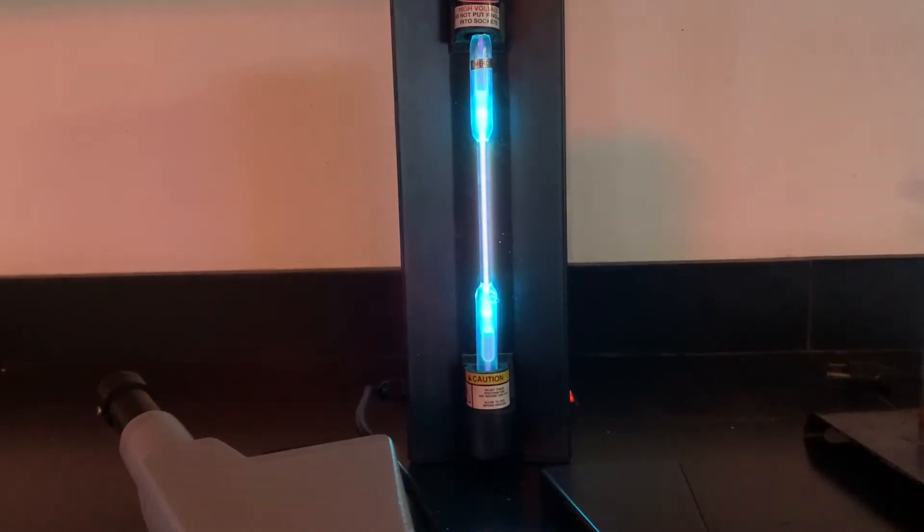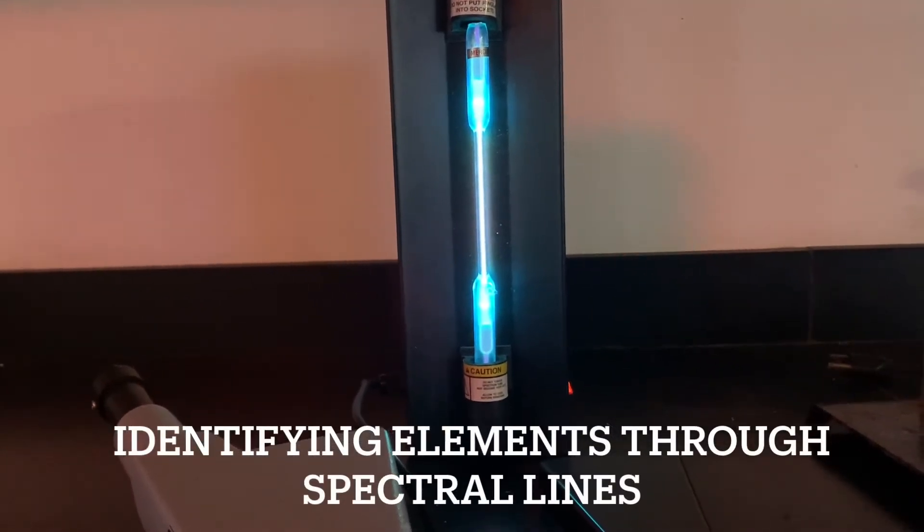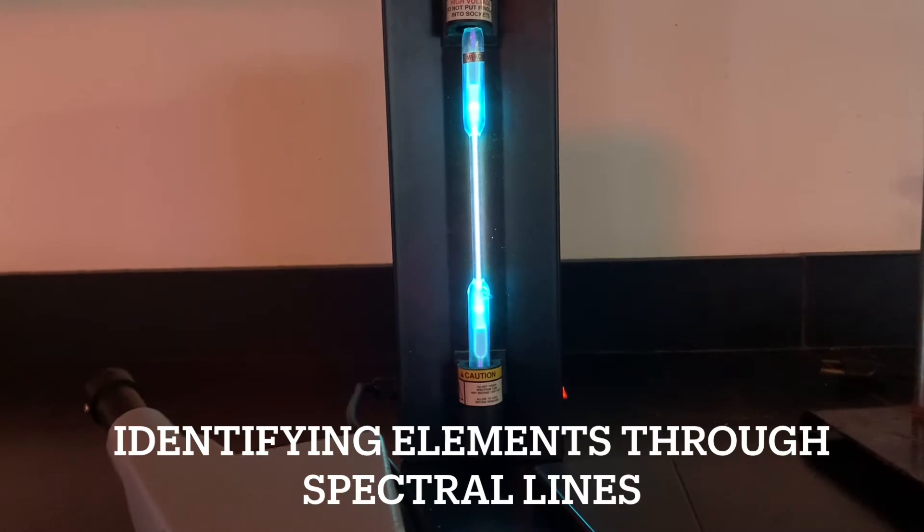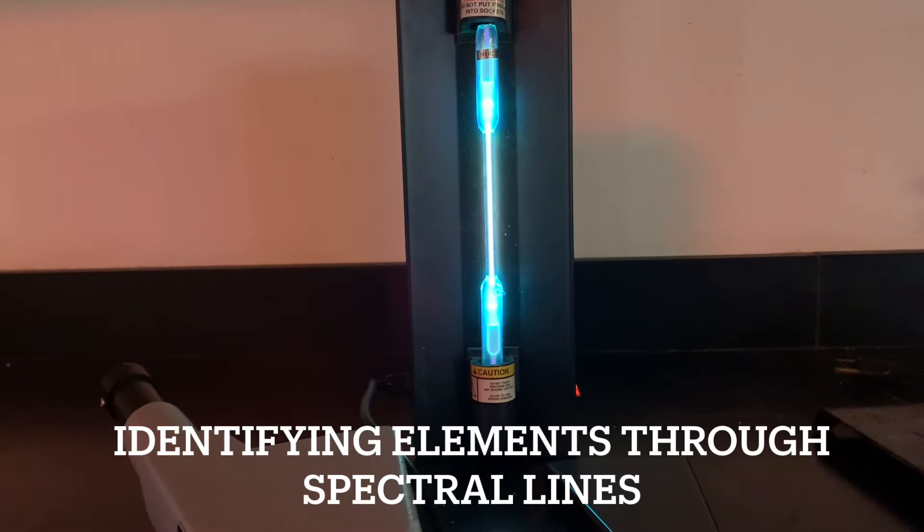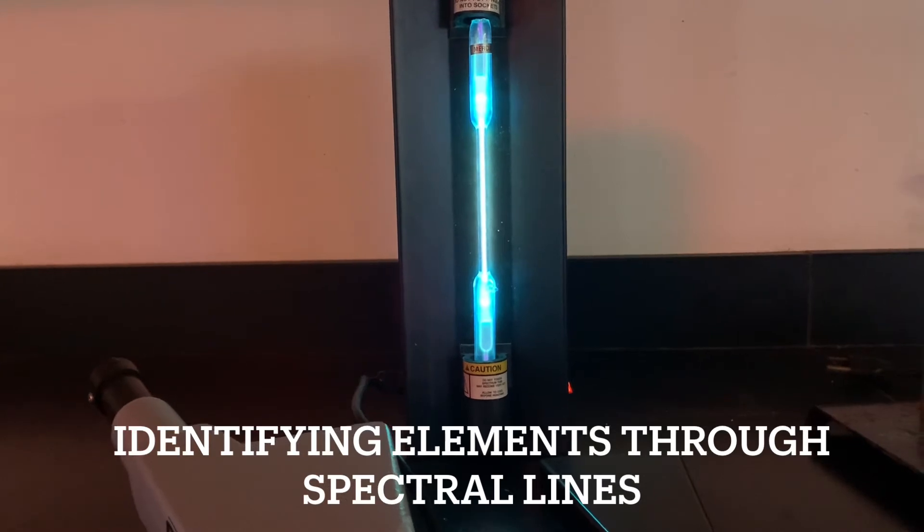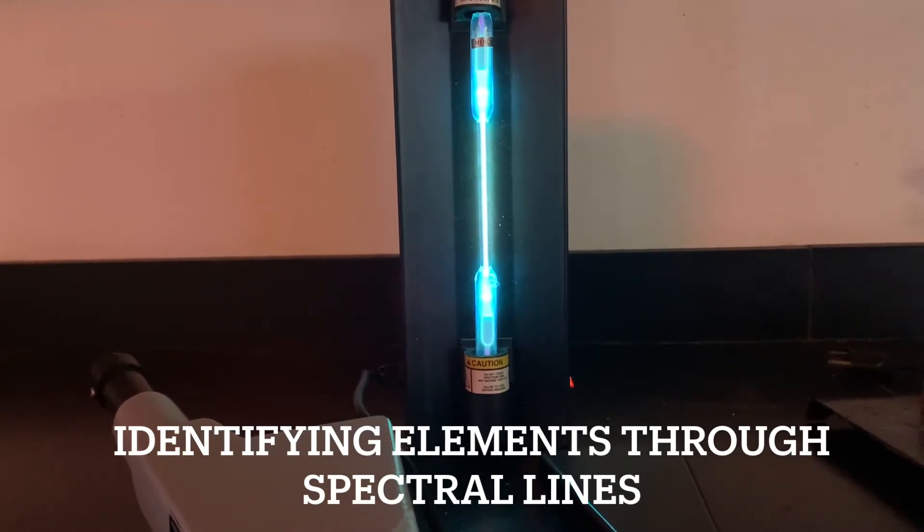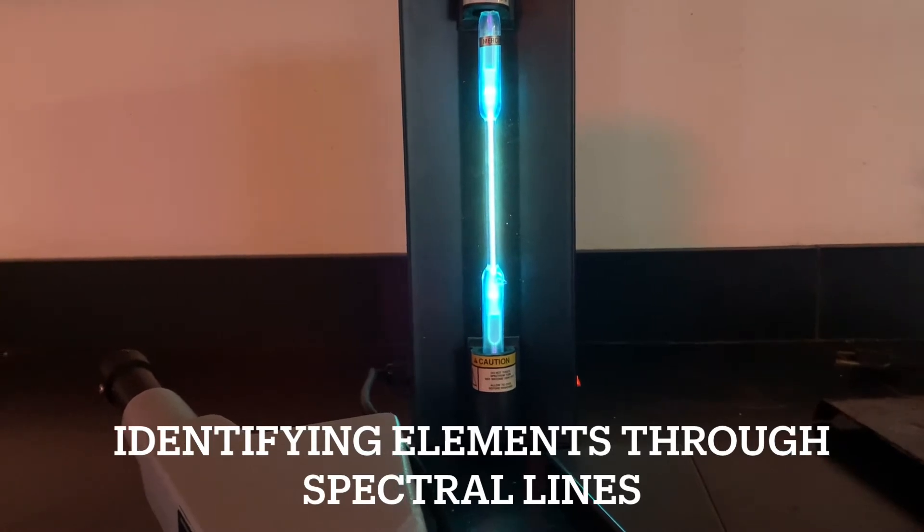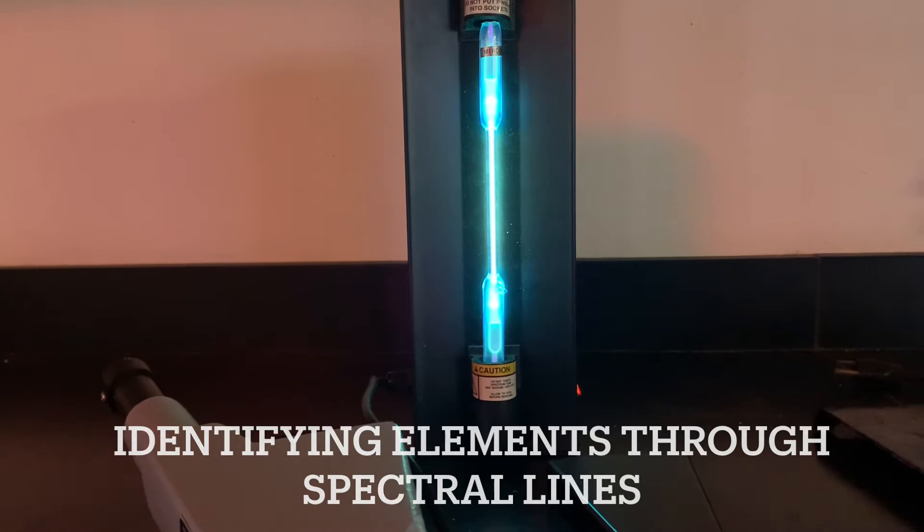So what are we doing? Well, each one of the gas emission tubes has a specific element in it. And we mentioned before that each element has spectral lines associated with it that help identify it. In fact, in astronomy that's how we figure out what's out in space. So for today's lab, you will be doing the same thing.